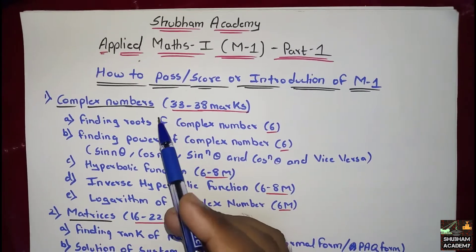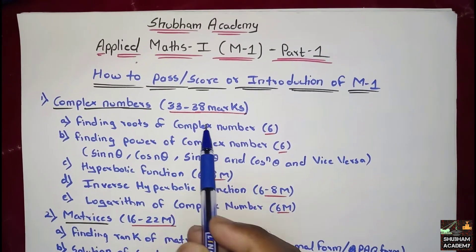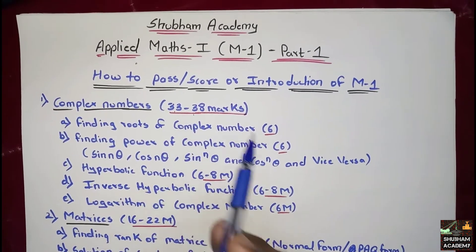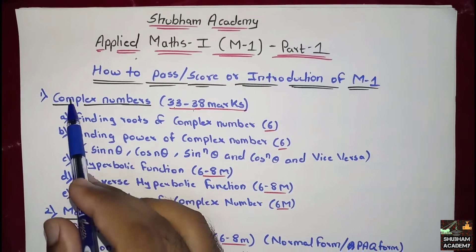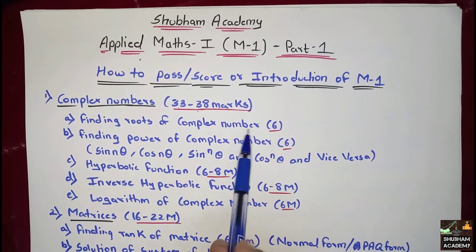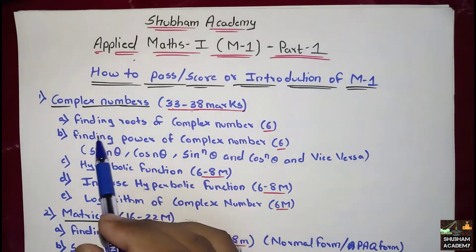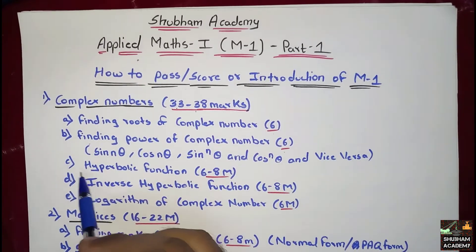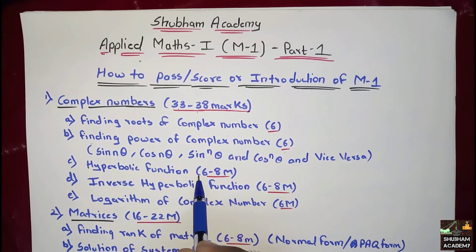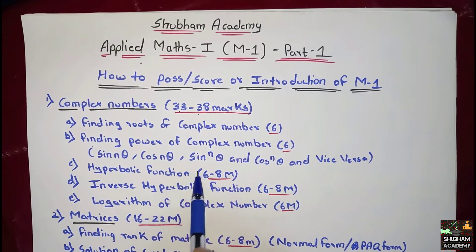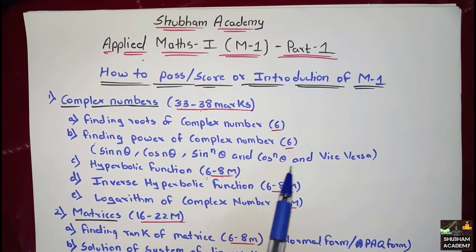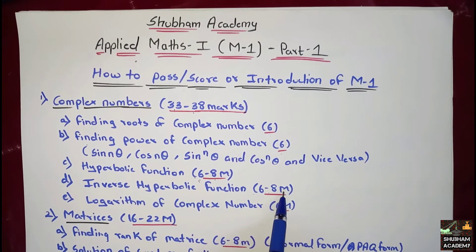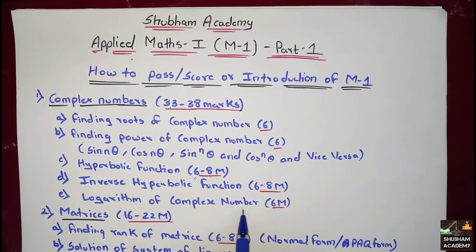Module 1 is Complex Numbers, carrying 33 to 38 marks. The first topic is finding the roots of a complex number — 6 marks. Finding power of a complex number — 6 marks. Hyperbolic functions — 6 to 8 marks. Inverse hyperbolic function — 6 to 8 marks. Logarithm of complex number — 6 marks.